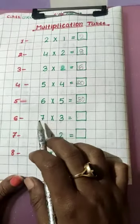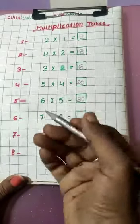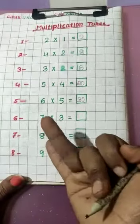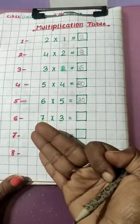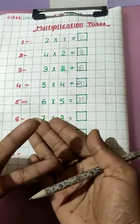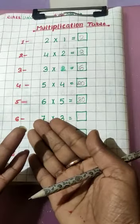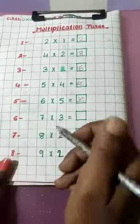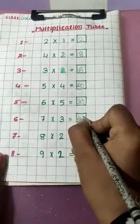3 ka table, seven times pardhayenge. 3 one jaa 3, 3 two jaa 6, 3 three jaa 9, 3 four jaa 12, 3 five jaa 15, 3 six jaa 18, 3 seven jaa 21. 3 seven jaa 21. Write here, 21.